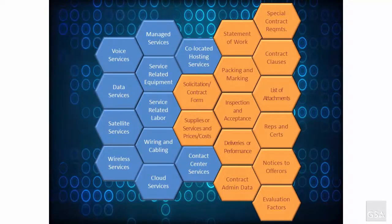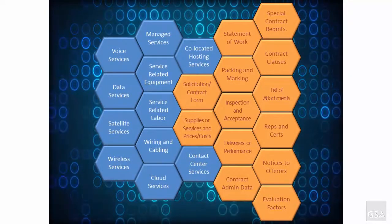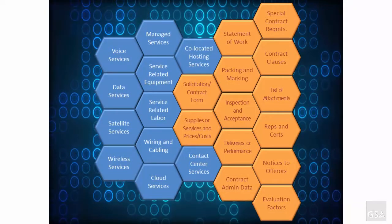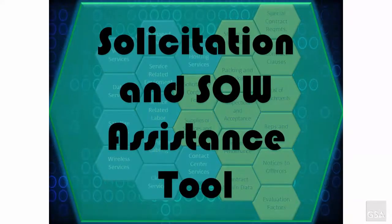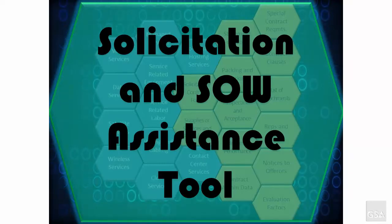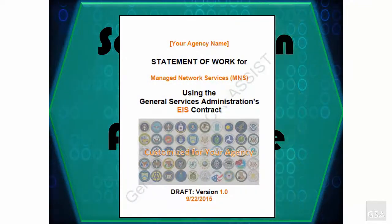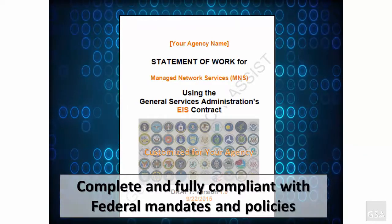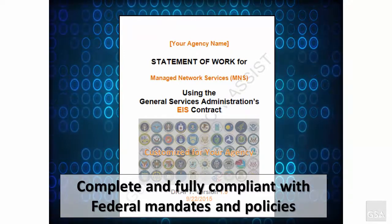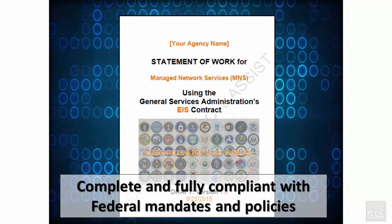Once we were able to map requirements to services, all we had to do was develop the boilerplate that surrounds the technical descriptions and operational particulars, and to fully integrate all the components of the solicitation into the Solicitation and SOW Assistance tool. The bottom line is that with SSAT, we can now dramatically accelerate the process of writing a draft solicitation — a solicitation that fully complies with federal mandates and policies, and has been vetted by GSA's contracting officers.